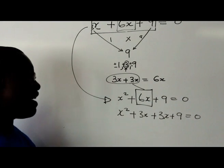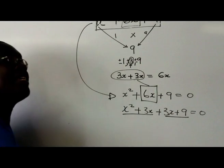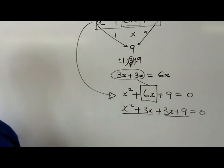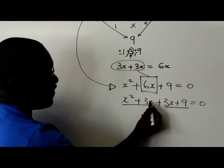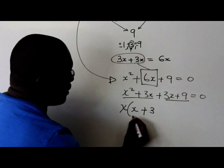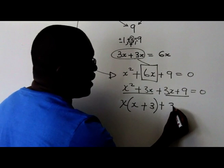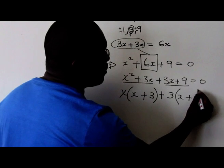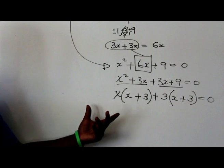What I've achieved is splitting the 6x so that I can look at the first two terms and the second two terms separately, and find a common factor in each group to factorize the left-hand side. In the first group, the common factor is x: x times x gives x squared, and x times 3 gives 3x. In the second group, the common factor is 3: 3 times x gives 3x, and 3 times 3 gives 9.